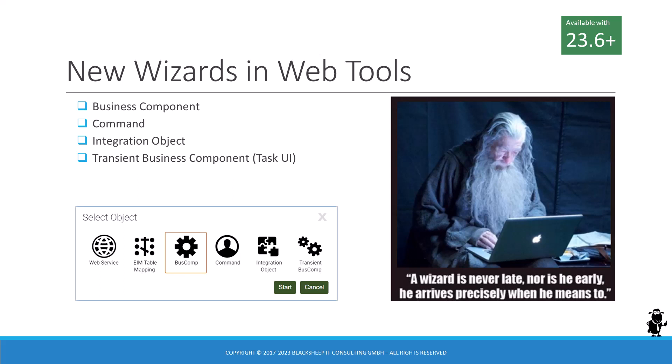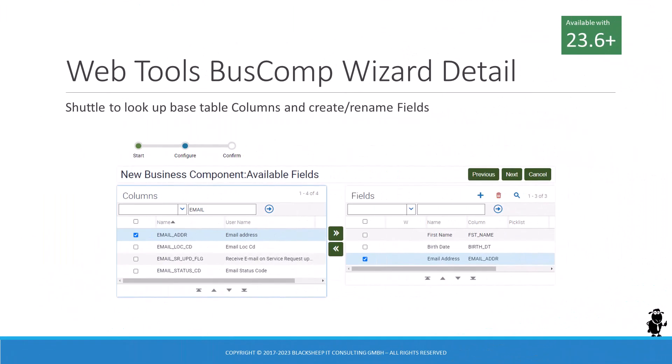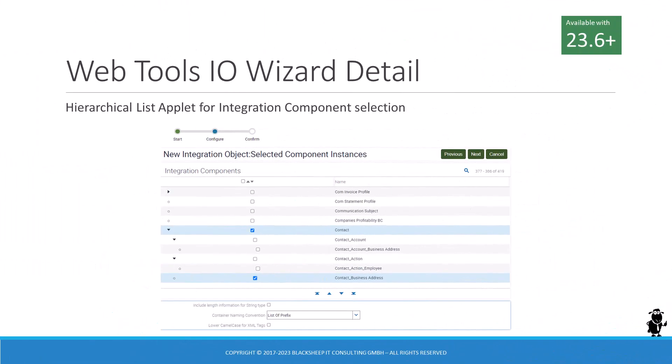Oracle uses task-based UI to create the WebTools wizards, so the look and feel is understandably different from the classic Siebel Tools experience, yet the overall functionality remains the same. For instance, the selection of columns from the base table to create an initial list of fields in a new business component is facilitated by the shuttle applet combination. In the integration object wizard, the selection of future integration components is supported by a hierarchical list applet.